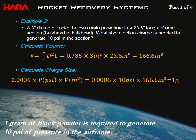Example 1: A 3-inch airframe with a main parachute section that is 23.6 inches long (bulkhead to bulkhead). What ejection charge size generates 10 PSI inside the section? Applying the cylinder volume equation with the known diameter and length, the volume is 166.6 in³. Charge size = 0.0006 × 10 PSI × 166.6 in³ ≈ 1 gram of black powder needed to eject this parachute.